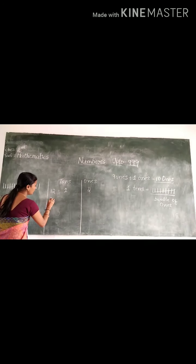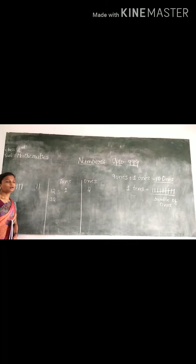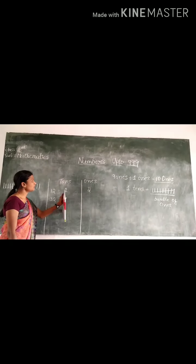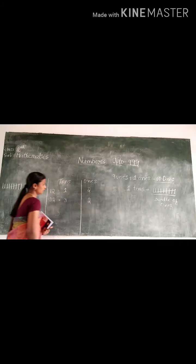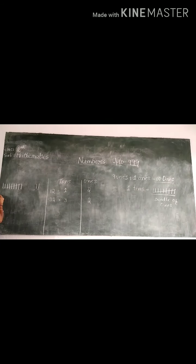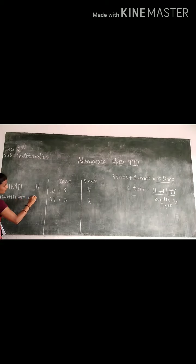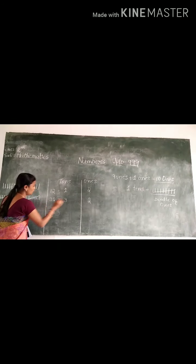If I do 32, how will you write? 3 written in the 10s column and 2 written in the 1s column. That gives us 3 bundles of 10: 1, 2, 3, 4, 5, 6, 7, 8, 9, 10 — counted three times — and 2 separate ones. Did you get this?